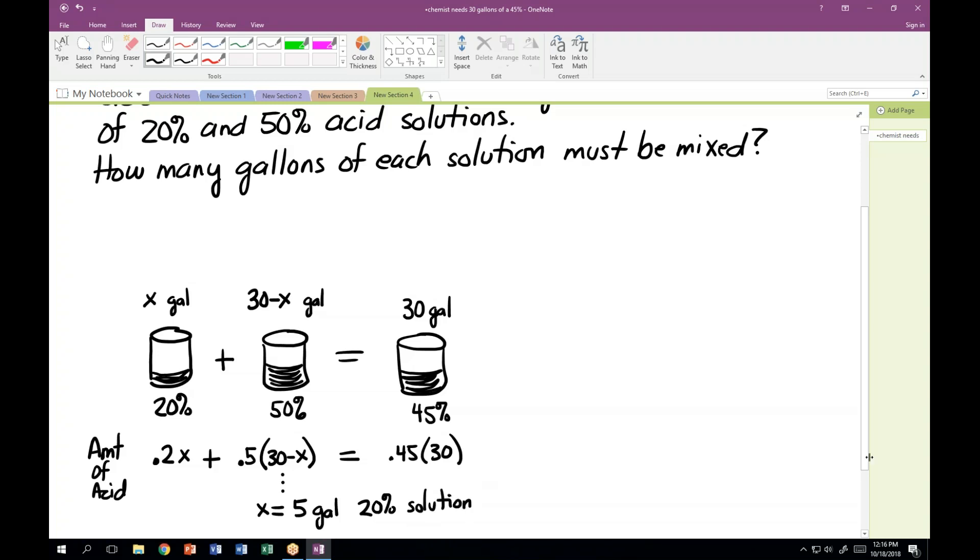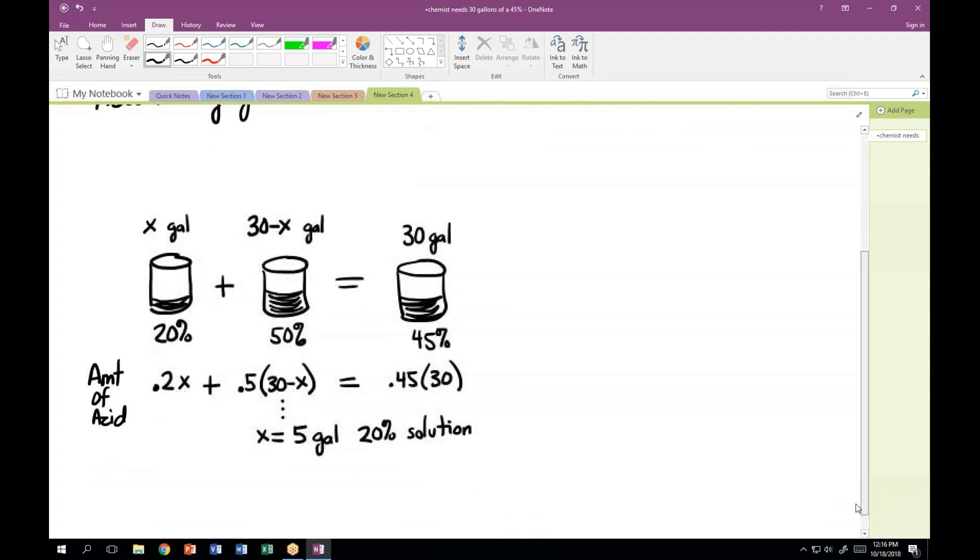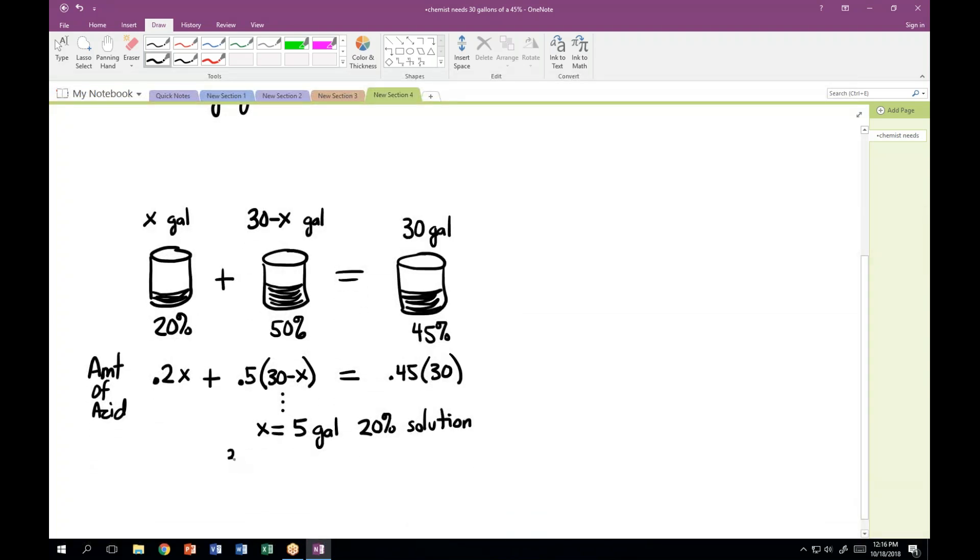So I know I'm going to need to use 5 gallons, and 30 minus x would be 25 gallons of the 50% solution. So there's our answers right there.